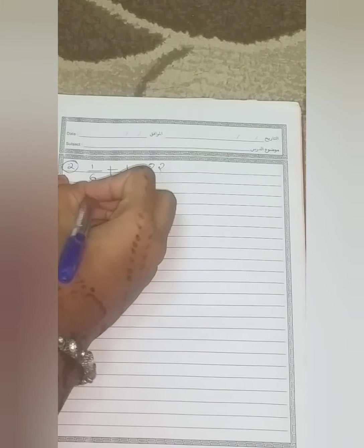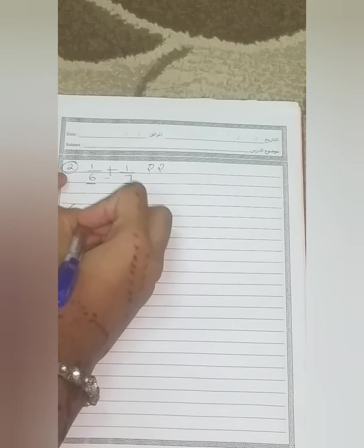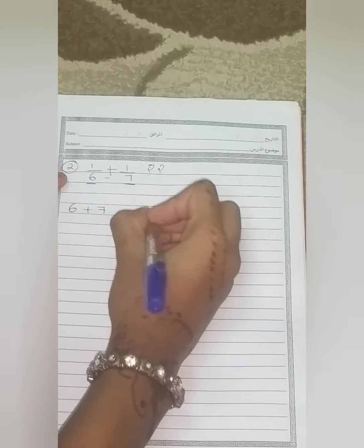So here, first of all, what's the first step is, we should add the denominators together. Here, the denominators are 6 and 7, so we get the answer 13.